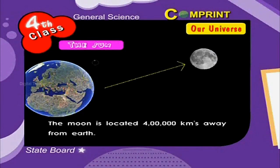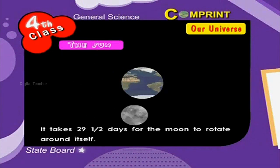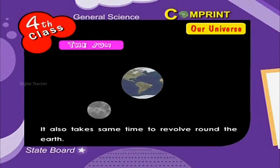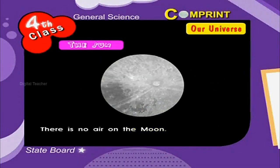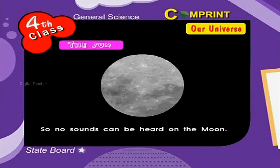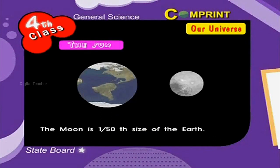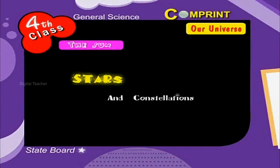The moon is located four lakh kilometers away from Earth. The moon revolves around the Earth, and it takes 29 and a half days for the moon to rotate around itself — the same time it takes to revolve around the Earth, which we consider as one month. There is no air on the moon, so no sound can be heard there and nothing grows on it. The moon is one-fiftieth the size of the earth, and we weigh less on the moon because the gravitational attraction there is very less.